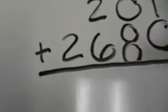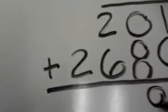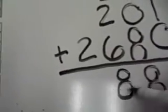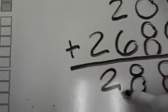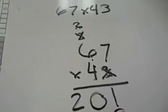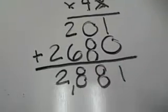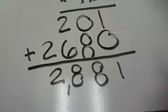1 plus 0 is 1. 8 plus 0 is 8. 6 plus 2 is 8. And 2 is 2. Thus my answer to 67 times 43 is 2,881.